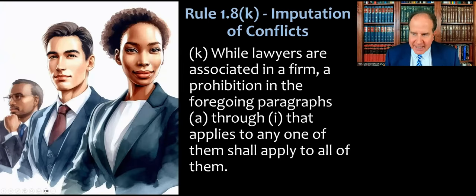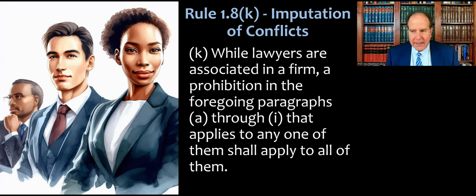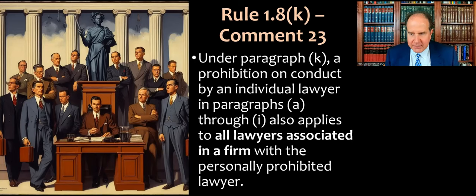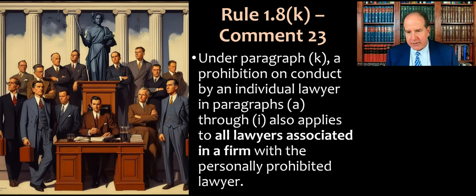1.8K begins: 'While lawyers are associated in a firm, a prohibition in the foregoing paragraphs A through I that applies to any one of them shall apply to all of them.' Comment 23 to Rule 1.8 clarifies: under paragraph K, a prohibition on conduct by an individual lawyer in paragraphs A through I — so that's 1.8A all the way through 1.8I — also applies to all the lawyers associated in a firm with the personally prohibited lawyer.